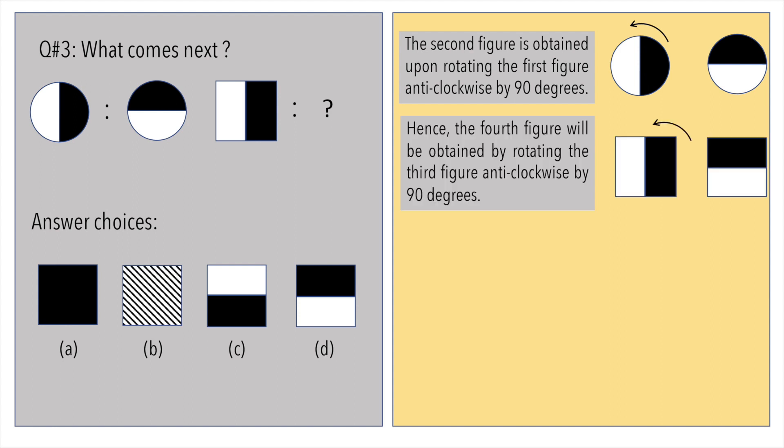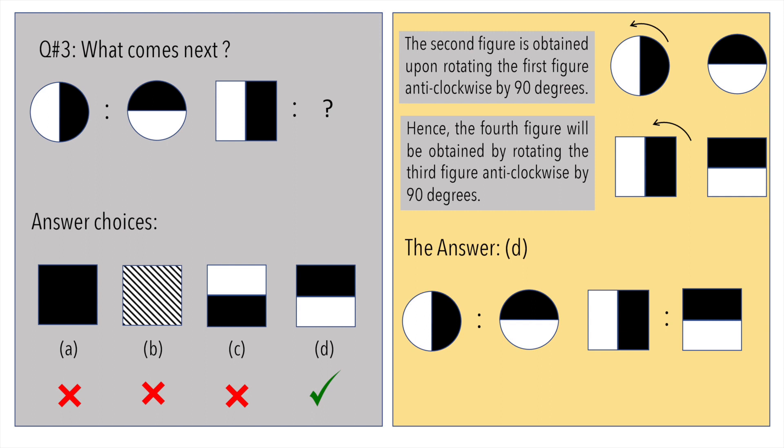Applying the same rule, the fourth figure will be obtained by rotating the third figure anticlockwise by the same 90 degrees. The answer is option D.